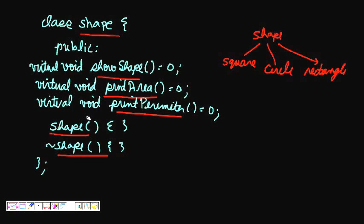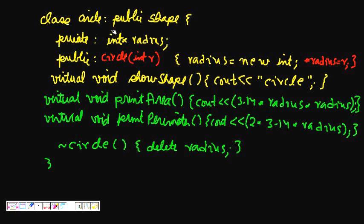Now what happens is we have a class Circle, so it derives from public Shape and we have a private int star radius. I have a new variable, I introduced a new variable radius, a pointer to it.